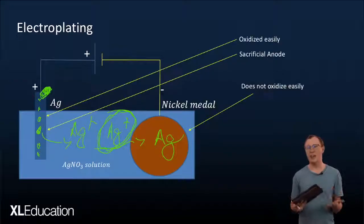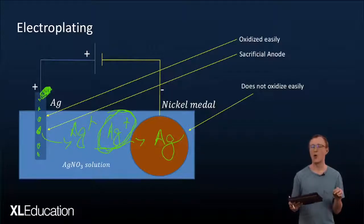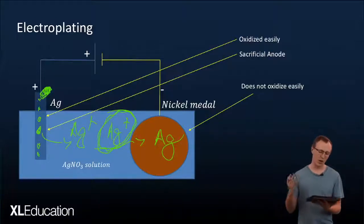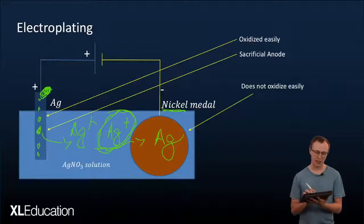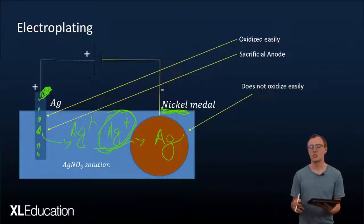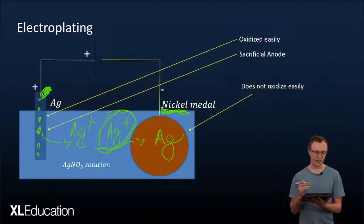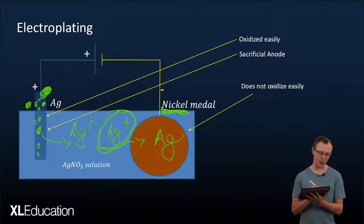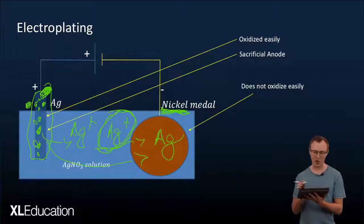So firstly our anode needs to be oxidized more easily than the cathode otherwise the cathode is going to undergo oxidation. So this metal we use here this nickel metal cannot be oxidized more easily than the silver. Secondly this anode is often called a sacrificial anode because all the metal if we allow this to run till completion is going to move off of this anode and end up on the metal. So we're sacrificing the anode we're destroying it in order to coat the metal with a substance.